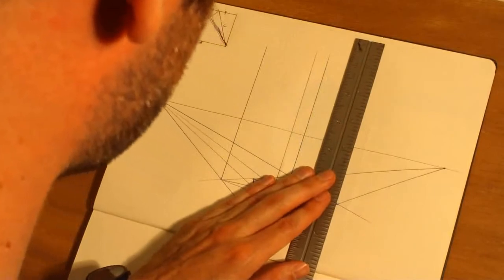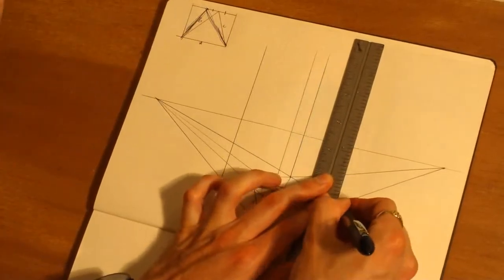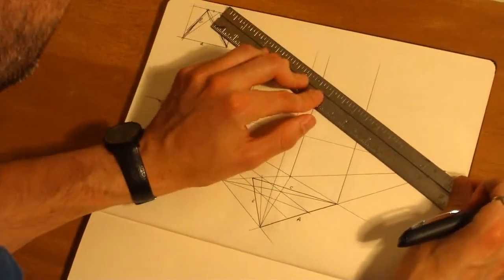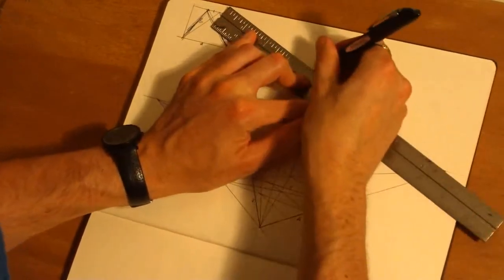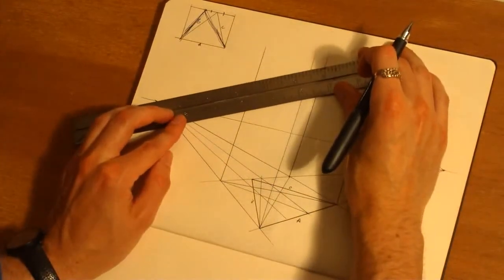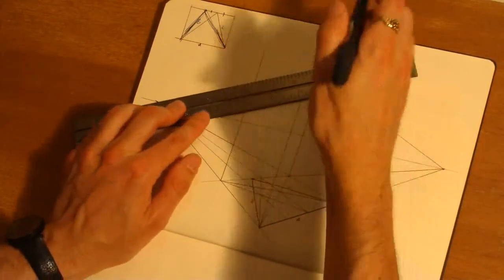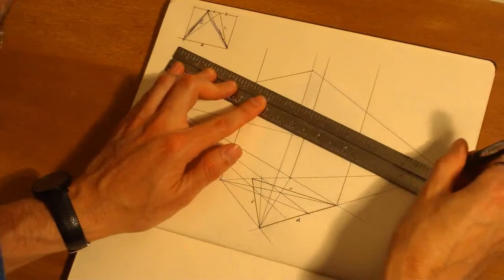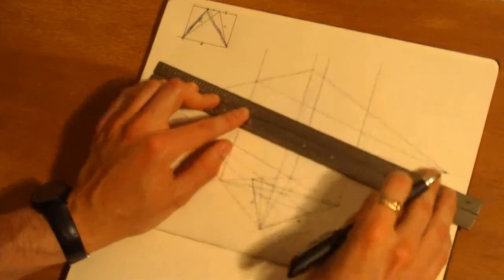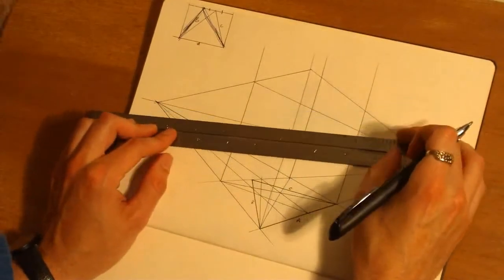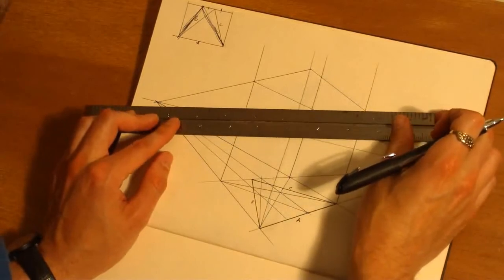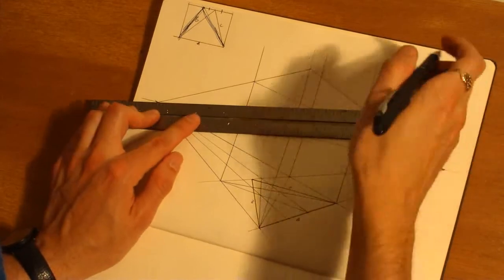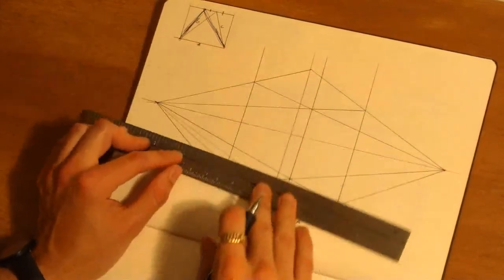I'm going to try to be pretty careful to keep these lines parallel to each other, but don't be too tight with it - you still want to have some freedom. So you can see this starting to take shape. We're just drawing a rectangular solid in two-point perspective.